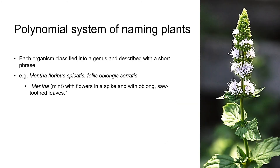All of the plant introductions being brought back to Europe needed to be named and described by European scholars. At that time Latin was the recognized language of science and scholars in Europe, and plants were described in Latin using a polynomial system. Polynomial just means many names. The way the polynomial system worked was that each organism was first classified into an appropriate genus — defined by Gaspar Bauhin as a group of plants with similar physical characteristics — and then the main physical characteristics of each plant were described using a phrase. The genus name plus that phrase were referred to as the polynomial.